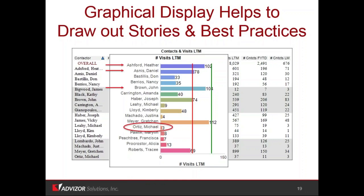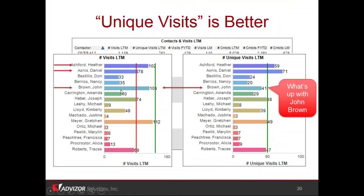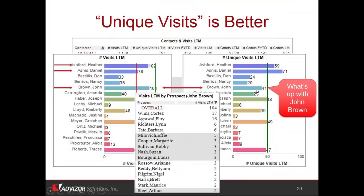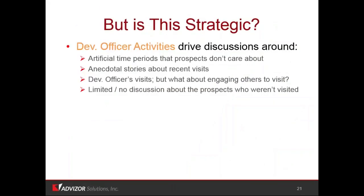What he's doing is leveraging other people to visit his prospects. He's not personally doing the visits. This concept of unique visits — John's unique visits are really low. Here's John Brown's actual visits by prospect: he's had 17 visits with Cortez in the last 12 months, Floyd Agrawal 16. We see this a bunch when you measure activities and people figure out the game — I'm going to get measured on visits, I'll get a lot of visits in. But what you really want is penetration of the pool — unique visits, not total visits. This gets into artificial time periods of fiscal year and anecdotal stories about visits driving all that stuff tactically.